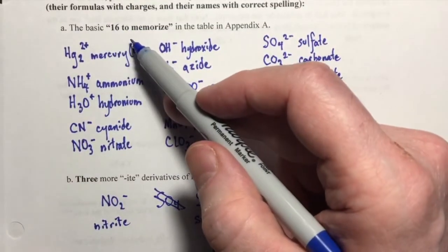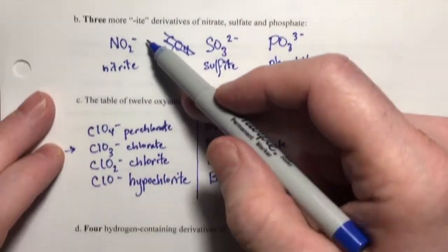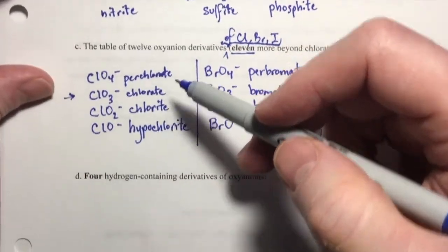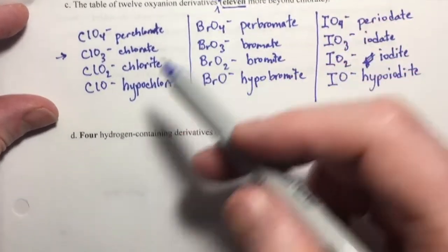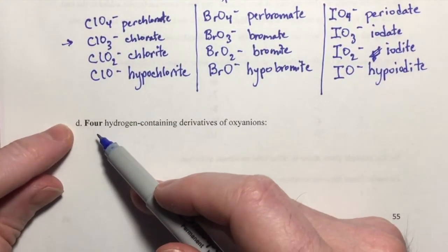So we had 16 plus 3 is 19 plus 11 is 30. And now we're going to add four more for our total of 34.